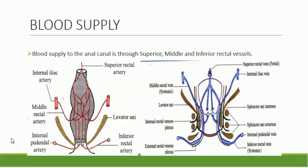The blood supply to the anal canal is through the superior, middle, and inferior rectal vessels. The superior rectal vessel supplies the upper part, the middle rectal and the inferior rectal artery (also called the internal pudendal artery) provide the arterial supply to the anal canal.